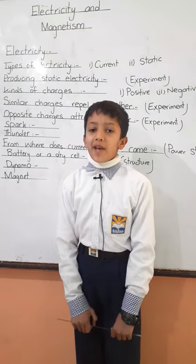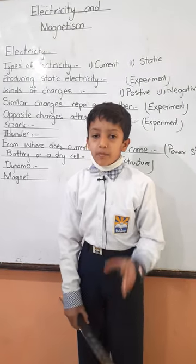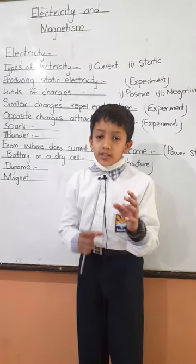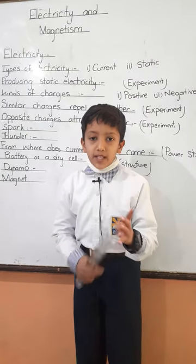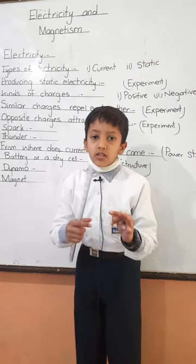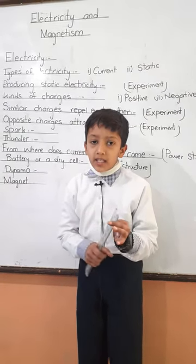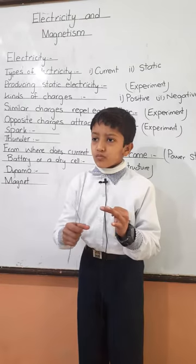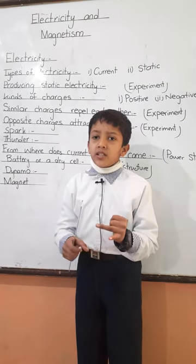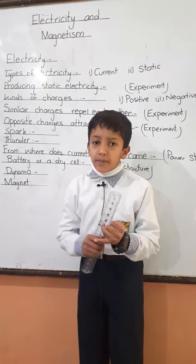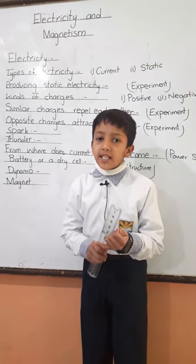Now, shapes of a magnet — we use button magnet, rod magnet, horseshoe magnet, U-shape magnet, etc.